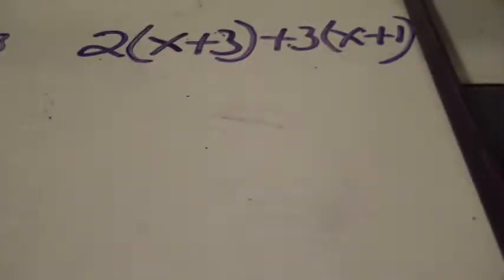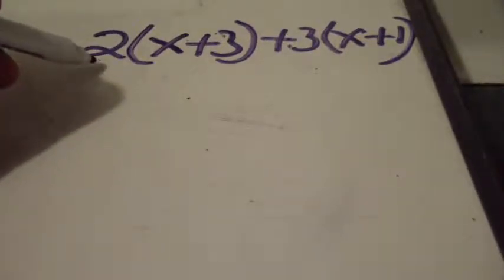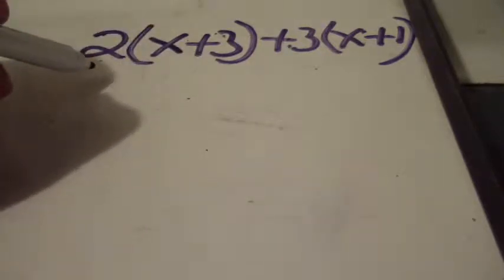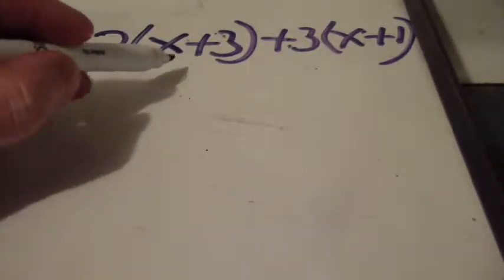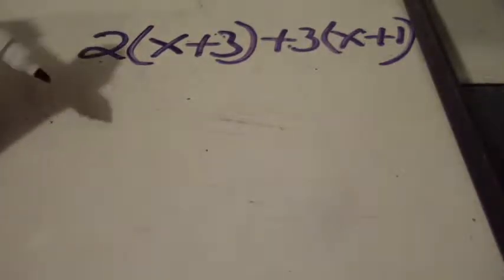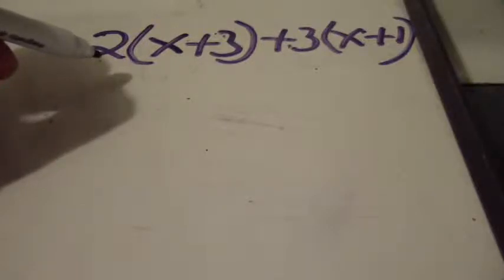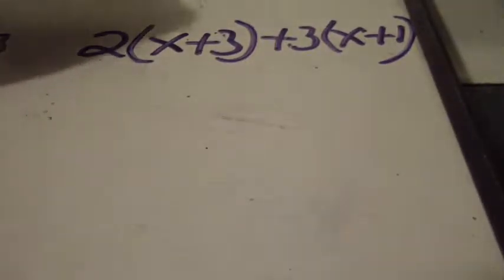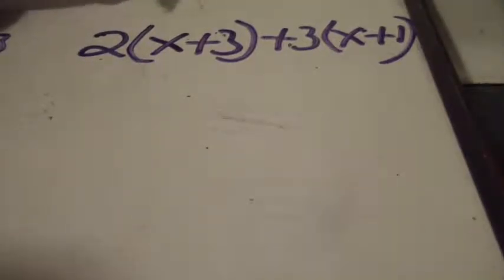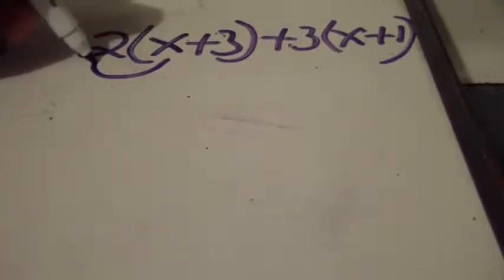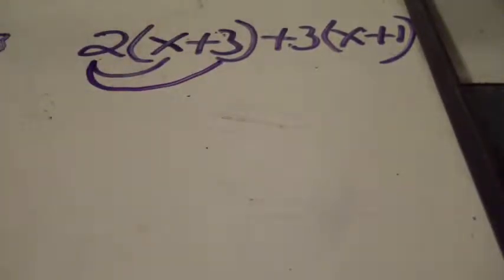Let's go to example number 3. So in example number 3, we have distributing we need to be done. We can't simply combine these yet because we haven't distributed. If you see we have a 2 next to the statement x + 3. This simply means 2 times x + 3. So what we have to do is distribute this 2 using what's called the distributive property.